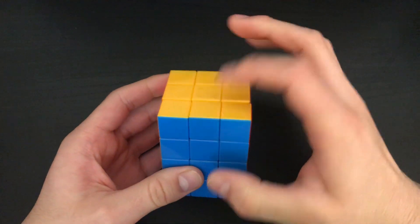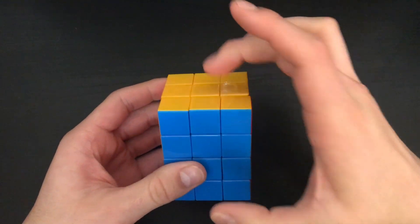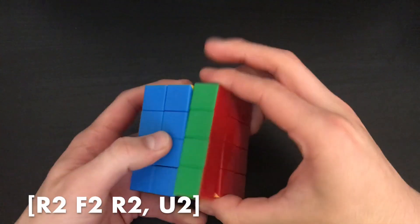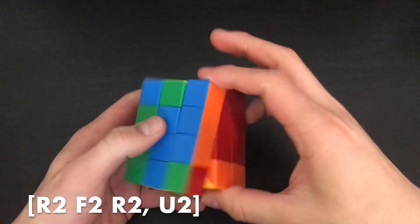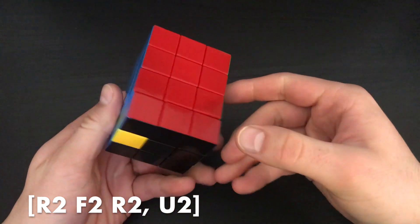For edges, I use the buffer UF, and set up to these three pieces, which can be cycled using R2F2R2U2, R2F2R2U2, or its inverse.